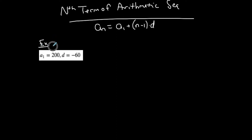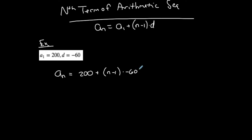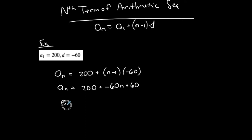For example, this one straight up gives me the first term and d, so I could just plug it in. The nth term of this particular sequence, which starts at 200 and has a common difference of negative 60, is equal to 200 plus n minus 1 times negative 60. Simplifying: an equals 200 plus negative 60n plus 60, so an equals 260 minus 60n.